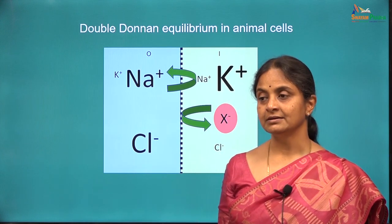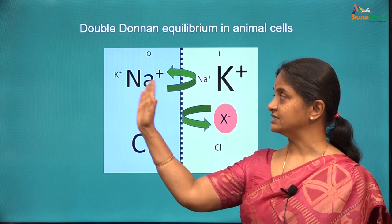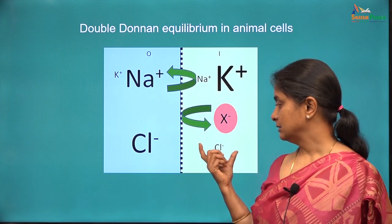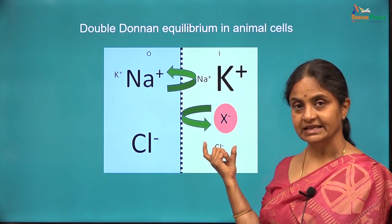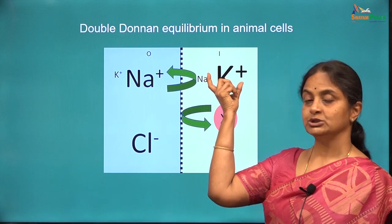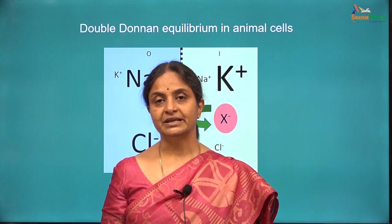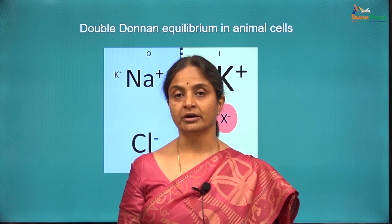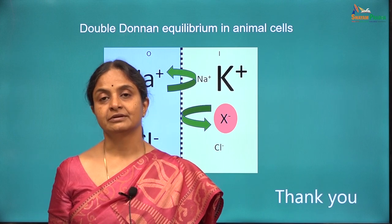Having reached an equilibrium state, the dictates of Donnan Equilibrium still hold good for the animal cell even though it involves multiple ion species. The first two conditions would therefore be: the total concentration of permeant anions within the cell will be lower than the other side, and the total concentration of cations within the cell will be higher than the concentration of cations outside the cell. With this we complete a discussion on the Donnan Effect and Donnan Equilibrium. From here we will move on to membrane potentials in the next session. Thank you for watching this NPTEL lecture.